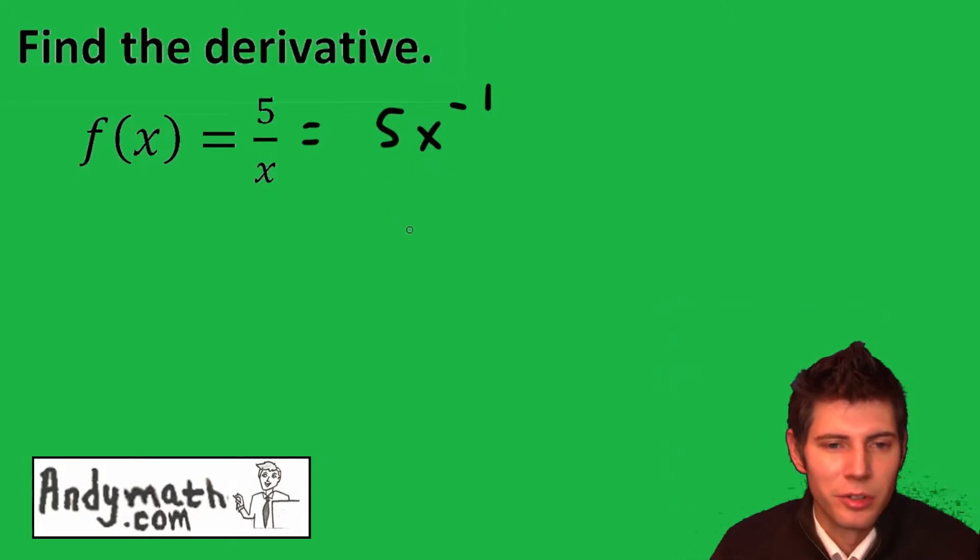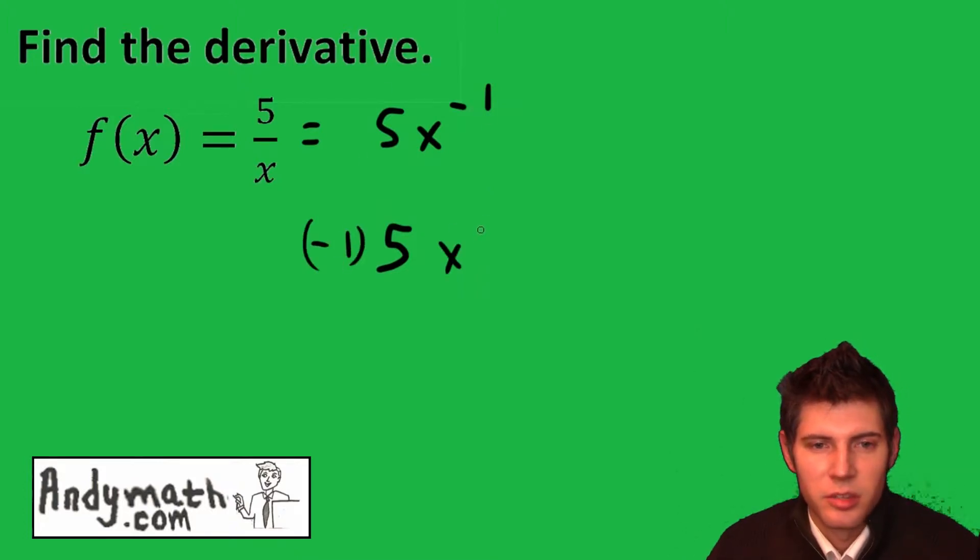So now we just use the power rule for the derivative. Bring the 5 down and then bring the negative 1 down, x and then subtract 1 from it to the negative 2.